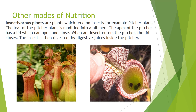Now, insectivorous plants — what are insectivorous plants? These plants are actually green plants so they do have chlorophyll and can perform photosynthesis, but beside photosynthesis they also eat insects. That's why we call them insect-eating plants or insectivorous plants. One such example is the pitcher plant. The leaf of the pitcher plant is modified in the form of a pitcher, and the apex of the leaf is modified in the form of a lid which can open and close freely.